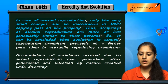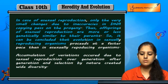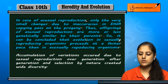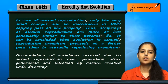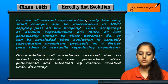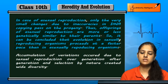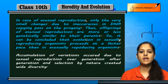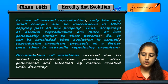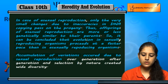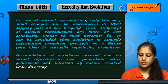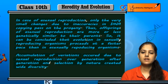It can be concluded that evolution in sexually reproducing organisms proceeds at a faster pace than in asexually reproducing organisms, because in sexually reproducing organisms there are a lot of variations, allowing them to evolve quickly as they can adapt and change. The accumulation of variations due to sexual reproduction over generations, along with natural selection, creates diversity.